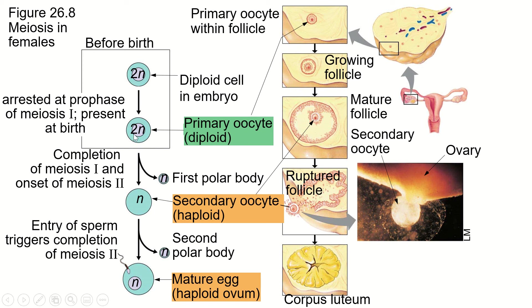So we start off with a primary oocyte, and then after completing meiosis 1, the cytoplasm is not evenly shared between the two cells. All the cytoplasm goes to one cell and the other cell gets basically a plasma membrane and a nucleus and that's it. That cell can't survive — it doesn't have all the stuff a cell needs to be a cell — so it's going to get reabsorbed by the ovary. It's called a polar body. So what we've created is one secondary oocyte, a really big haploid cell, and a polar body.